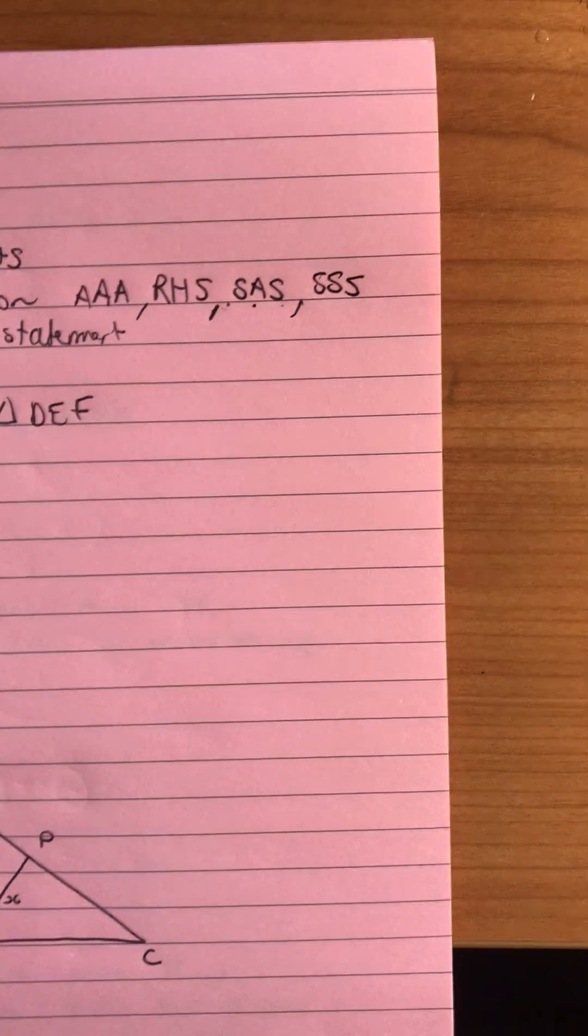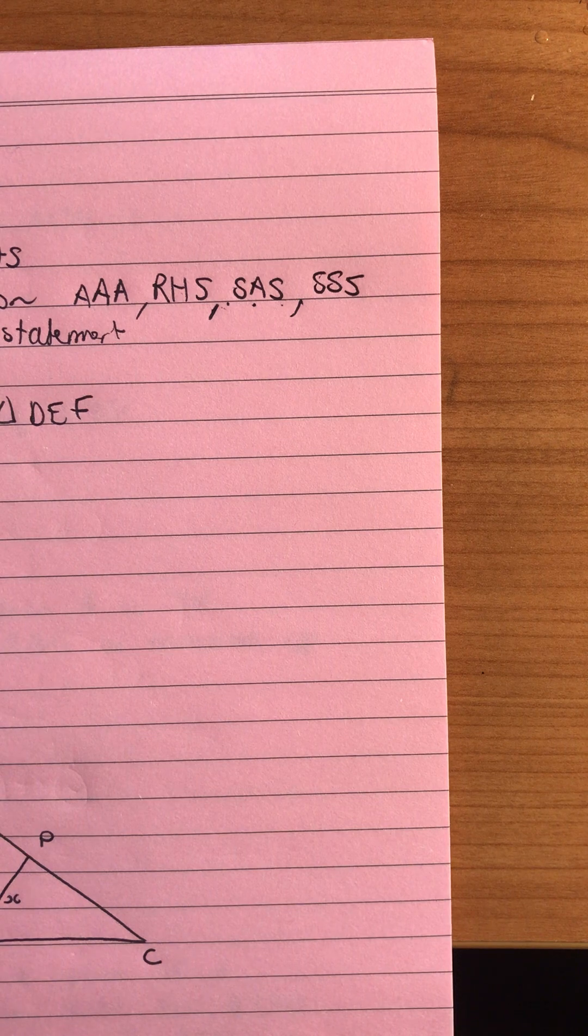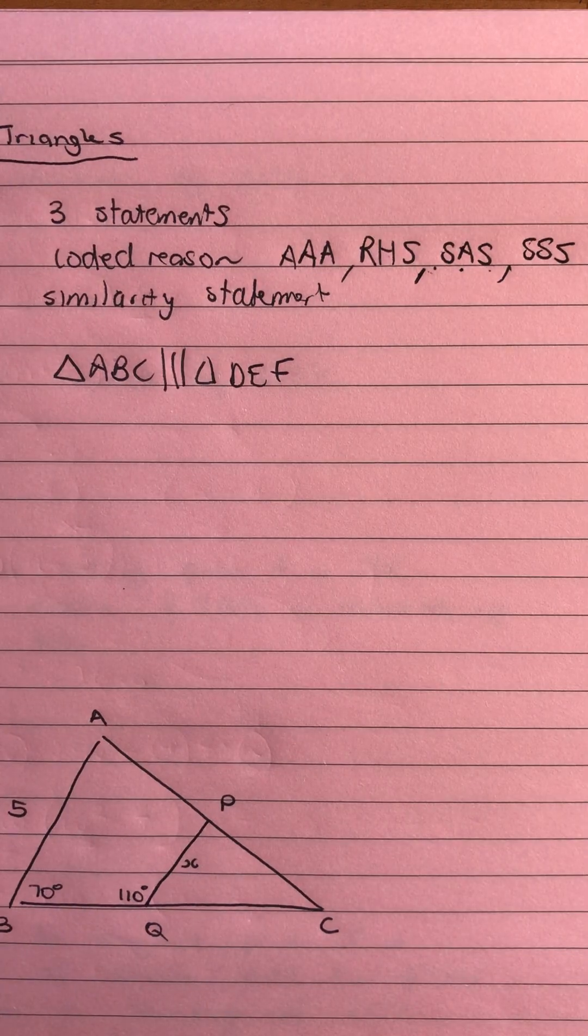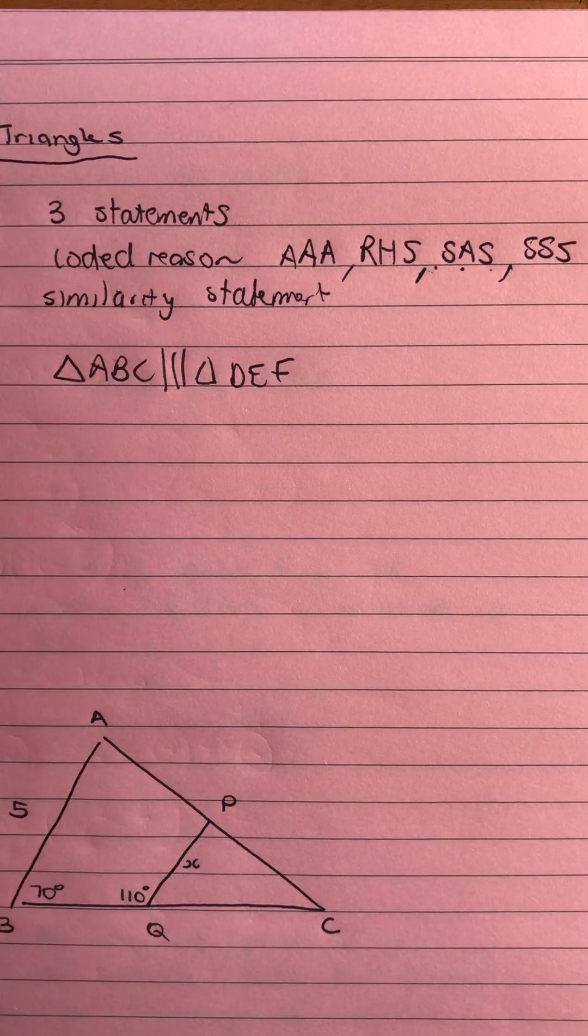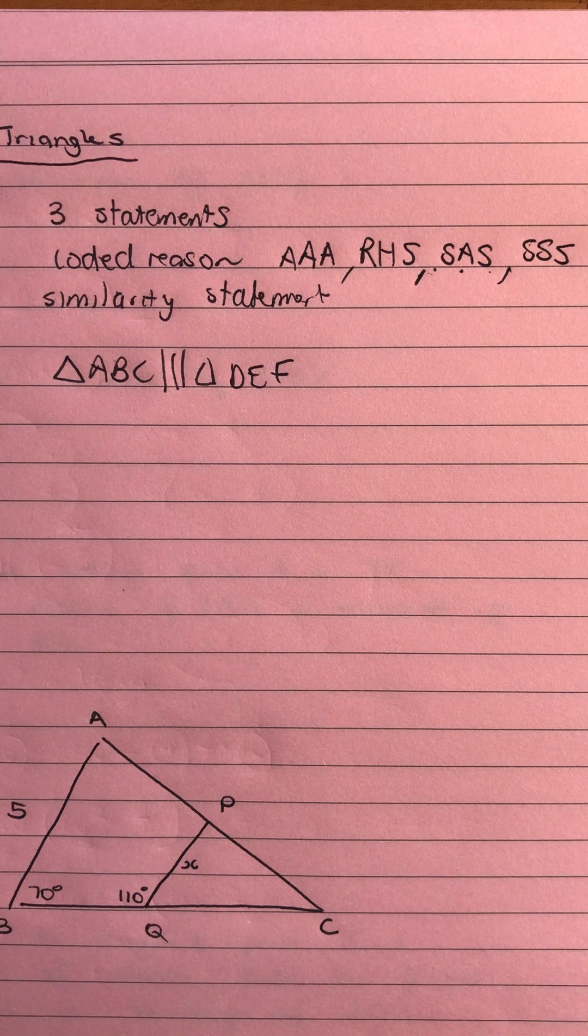And then we have SSS where we have the scale factor for each pair of sides and it's got the same scale factor for each of the three side pairs. So that's what we would be stating when we were going through that, stating what we know and how we can prove it.